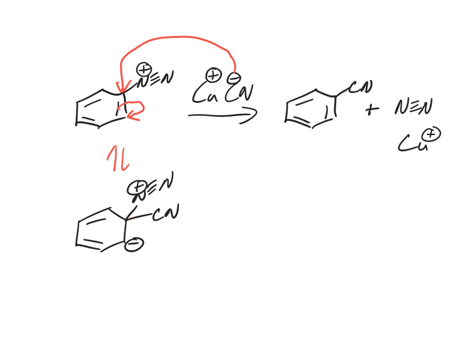Anytime you make a tetrahedral intermediate, you ask yourself, is there any good leaving groups? And if there are, let them leave. N2 is a really good leaving group. Bring those electrons down, make that pi bond, do that elimination, and that gets us to that product.